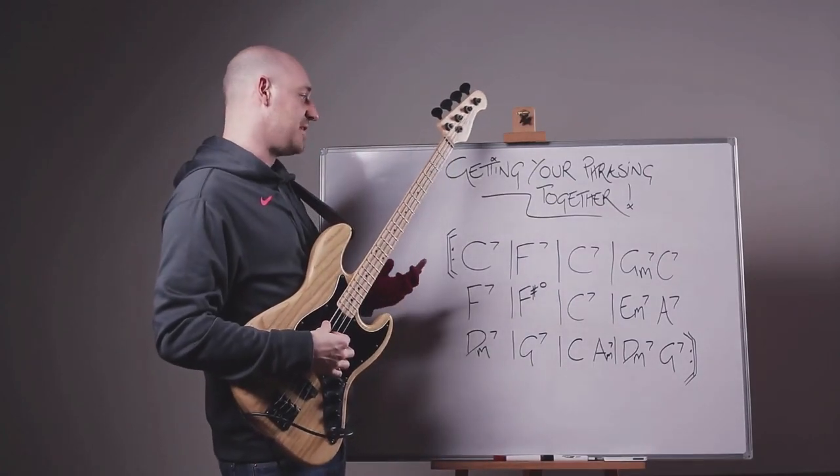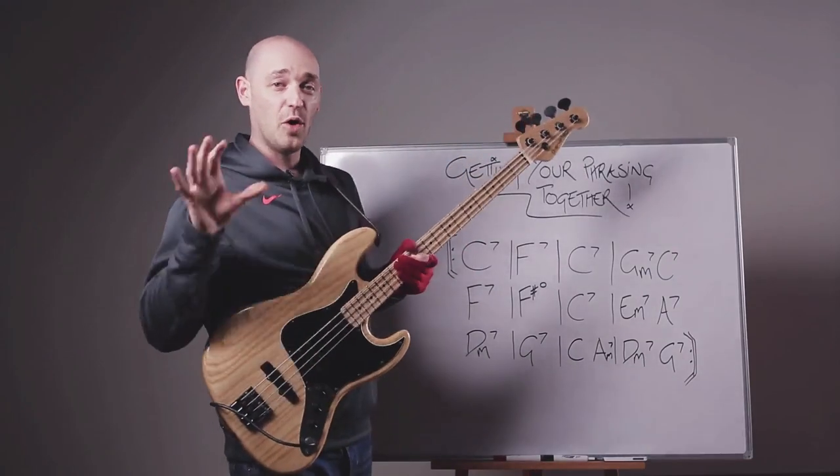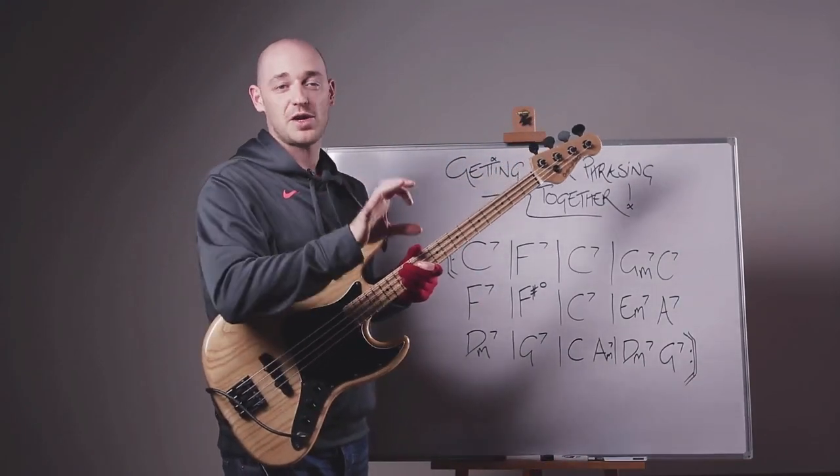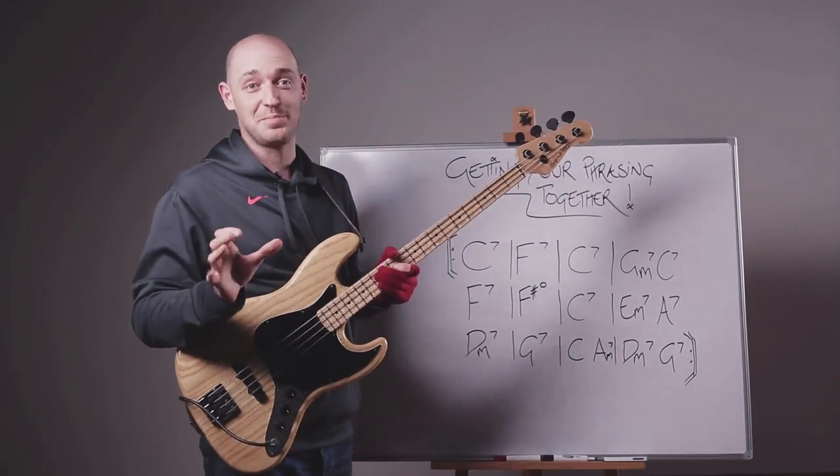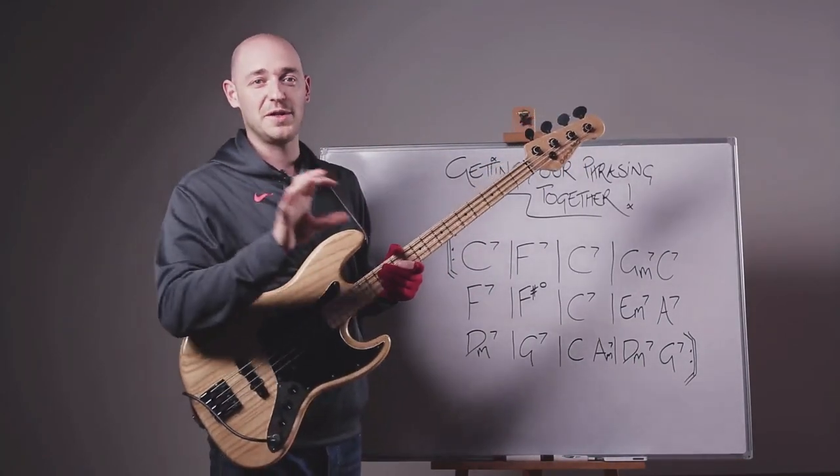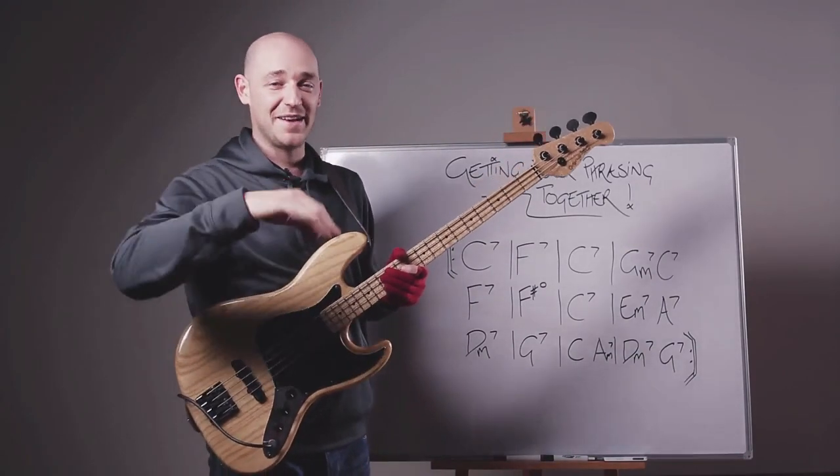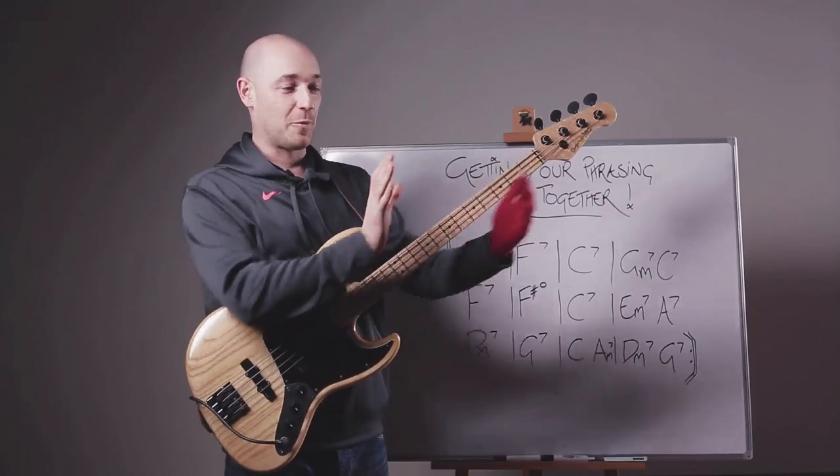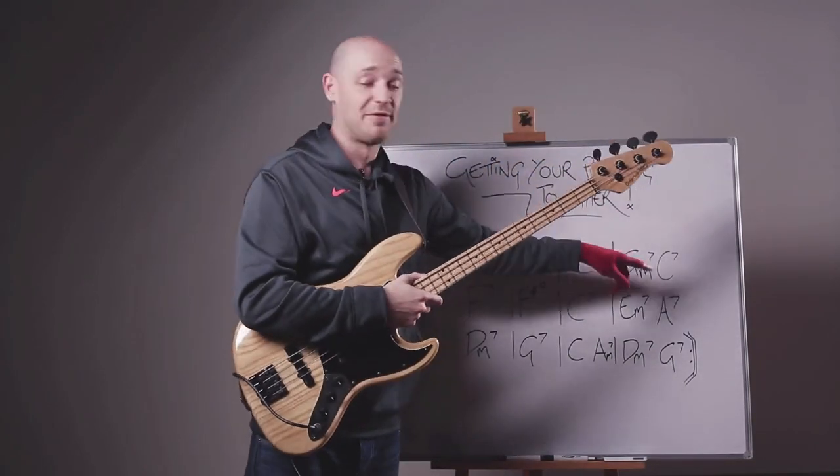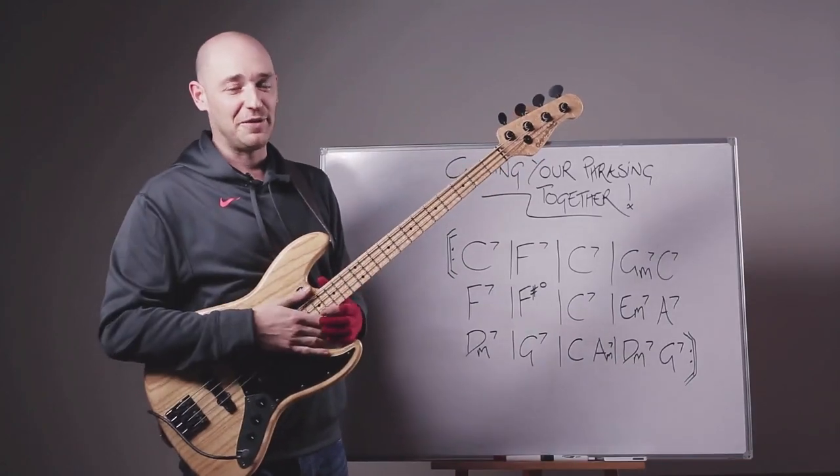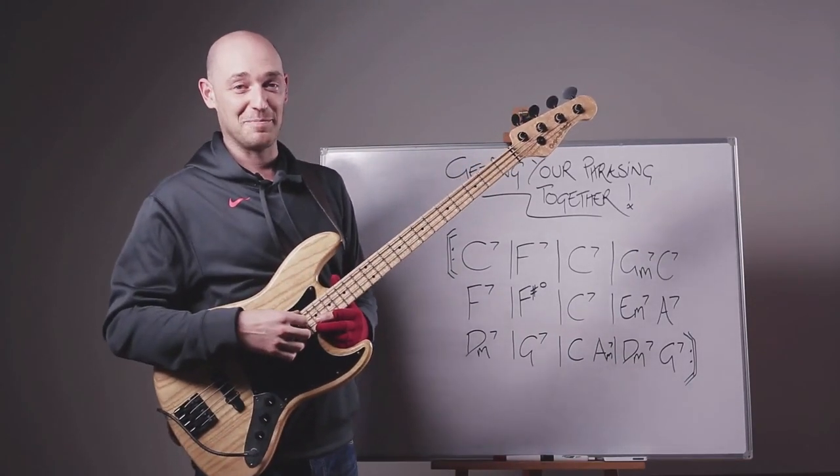So what we're going to be doing for this exercise is we're going to be using or going between a walking bass line and soloing. We're just going to be going between the two. That is how simple this exercise is, going between the two. But actually, finding your way back in and back out of these soloing and walking bass sections that I'm going to section off is really tough if you haven't done it before.